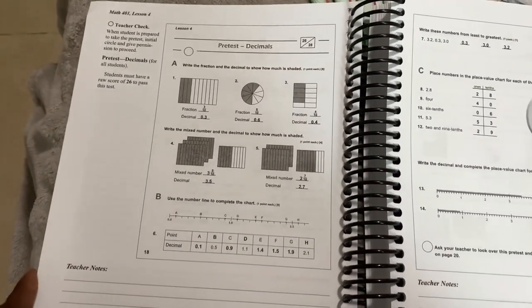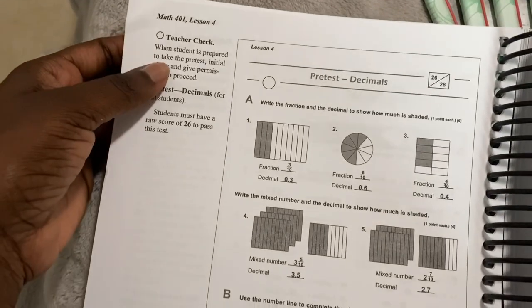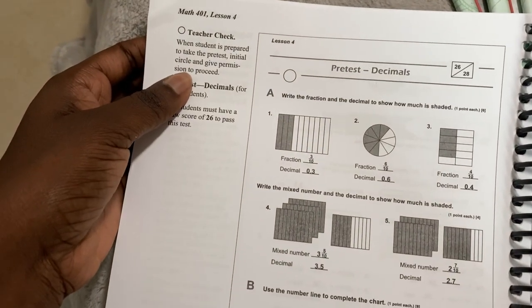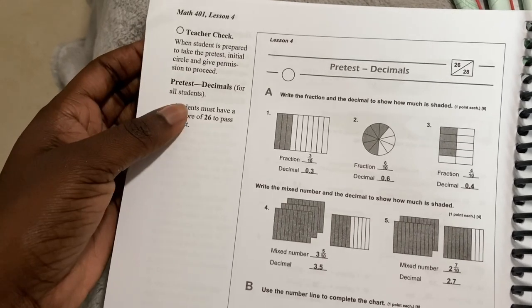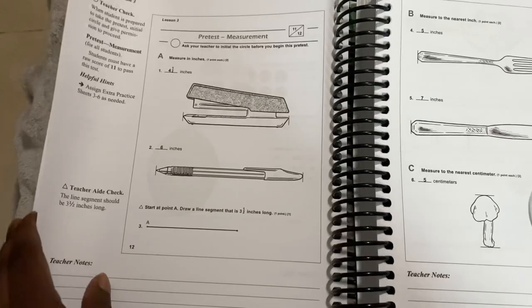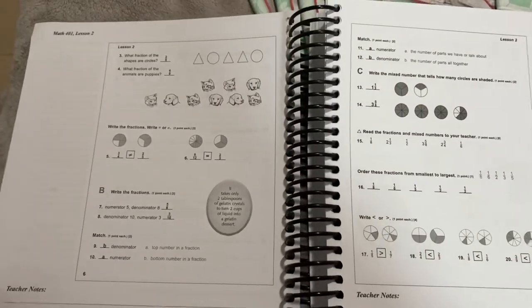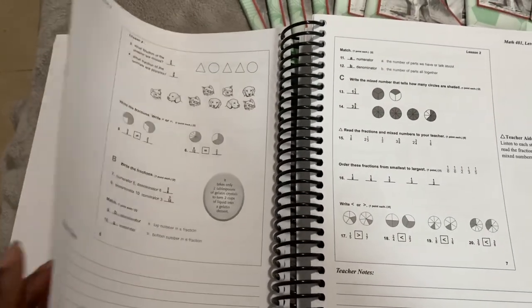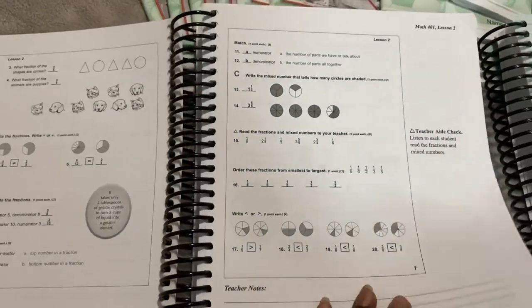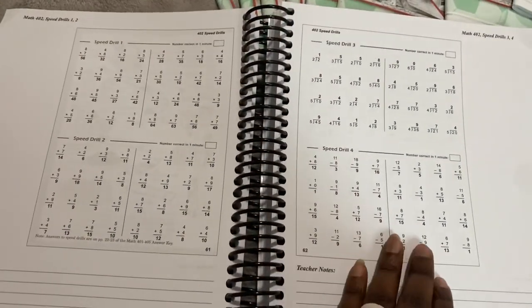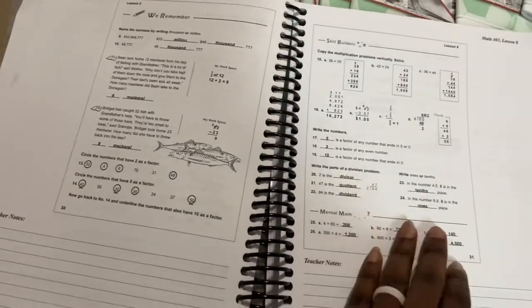So it's got teacher check. You know, when student is prepared to take the pre-test, initially circle and give permission to proceed. So it's just got small tips, but it doesn't really teach you how to teach them at this stage. Level 1 and a little bit of Level 2 did more of that. But this is pretty much an answer key.